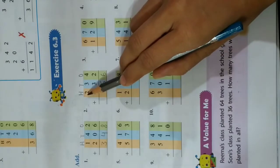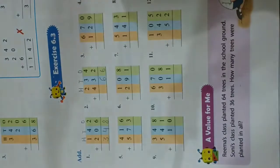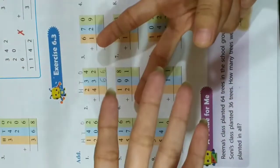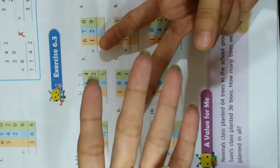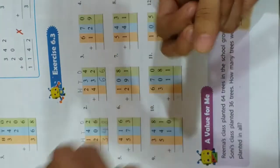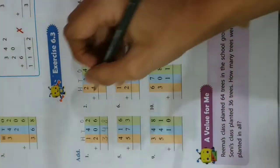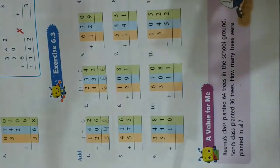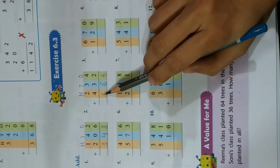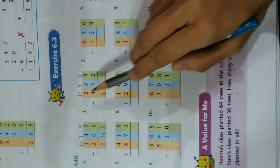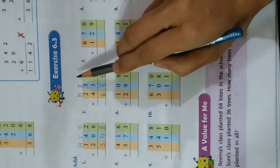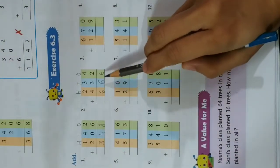Now at hundreds place, 2 is on top — take out 2 fingers. 4 is below — take out 4 fingers. Count all: 1, 2, 3, 4, 5, 6. Again you get 6. So what it becomes? 666. 6 is at hundreds place, this 6 is at tens place, and this 6 is at ones place — it becomes 666.